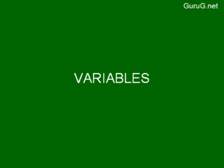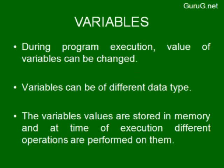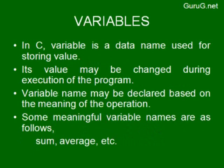The next topic is variables. During program execution, values of variables can be changed. This is one characteristic of variables — during programming we need to perform some operations where the values of a particular token need to be changed continuously. For that purpose we use variables. Variables can be of different data types, and their values are stored in memory where operations are performed at execution time in C.